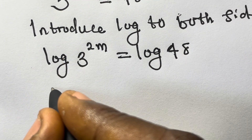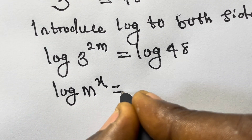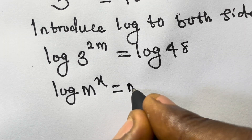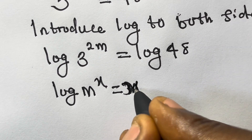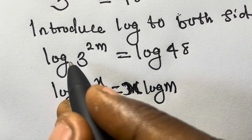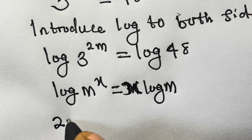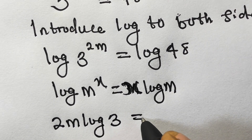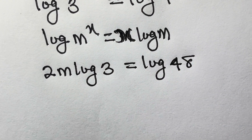Remember that when we have log m raised to power x, we bring the power x to the front, giving x times log m. Applying this rule, our expression now becomes 2m times log 3 equals log 48.